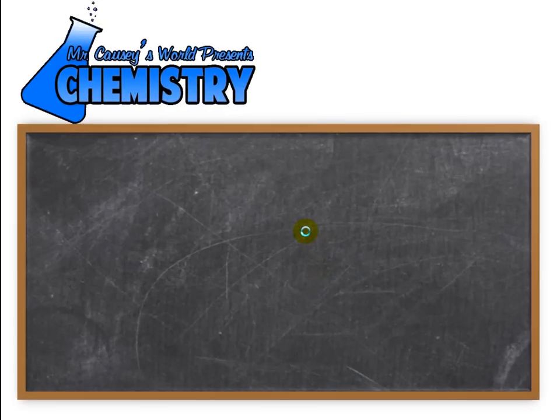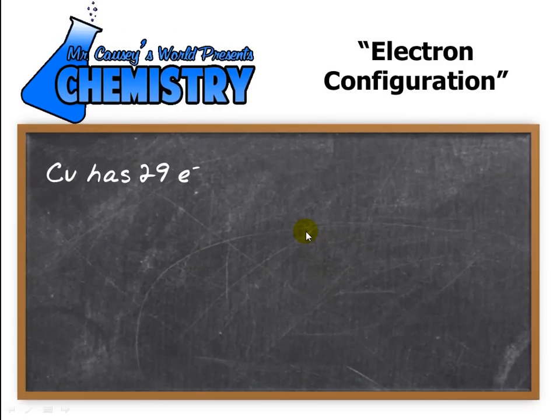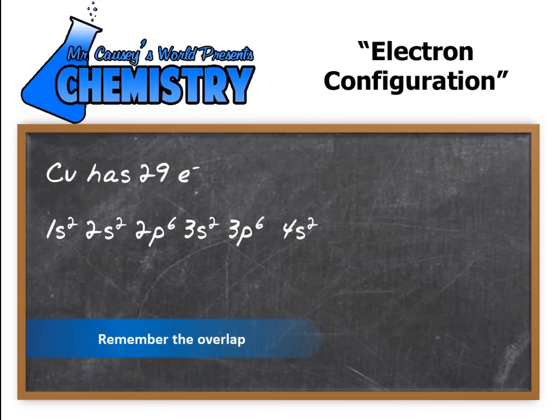So to the magic blackboard, electron configuration. Copper has 29 electrons. And I'm going to start out with 1s2, 2s2, 2p6, 3s2, 3p6. Then notice, remember we have the overlap, 4s2, and then 3d9.